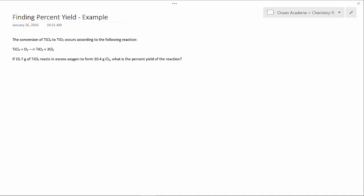Hello and welcome to Ocean Academy Chemistry 11. Finding percent yield example. The conversion of TiCl4 to TiO2 occurs according to the following reaction. If 15.7 grams of TiCl4 reacts in excess oxygen to form 10.4 grams Cl2, what is the percent yield of the reaction?